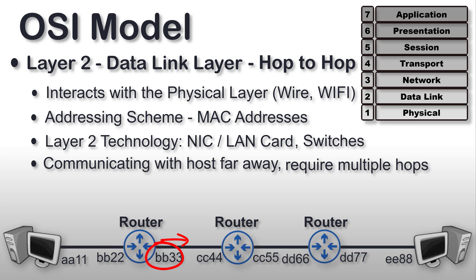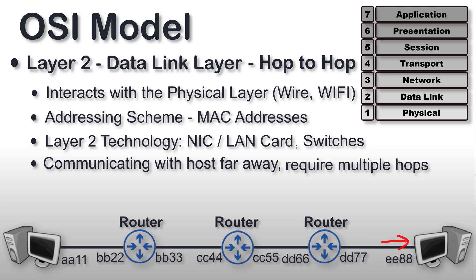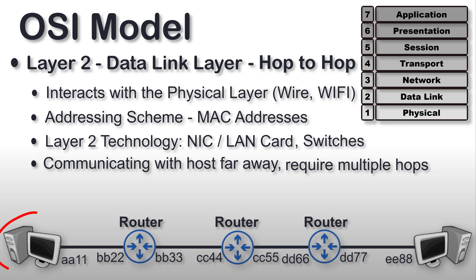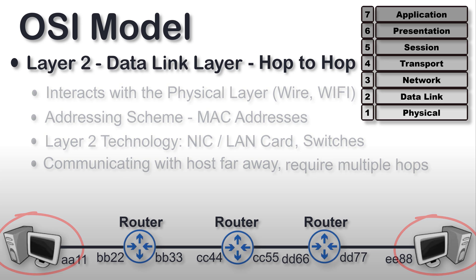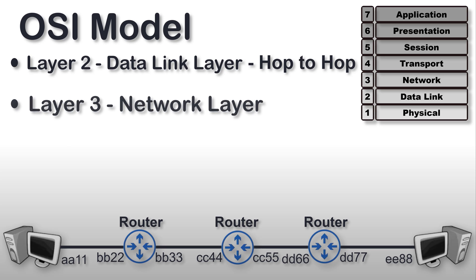Data moves from one network card to the next, and finally from the last network card to the destination host's network card. So you can see that MAC addresses — layer 2 — are handling the hop-to-hop delivery of data. Now, one question arises: if layer 2 only takes care of each individual hop, what ensures that data travels all the way from one endpoint to the other? That's where layer 3 comes into play — the network layer — whose goal is end-to-end delivery, whereas layer 2's goal is hop-to-hop delivery.